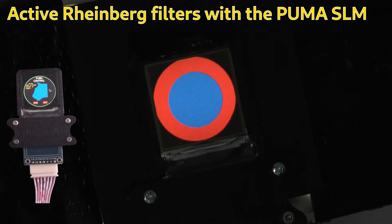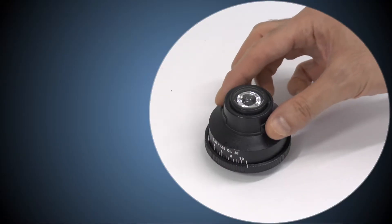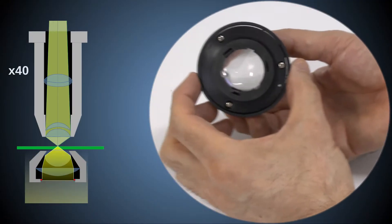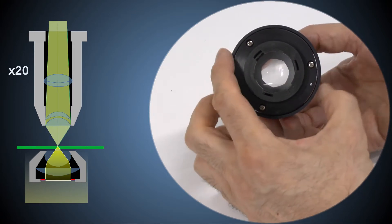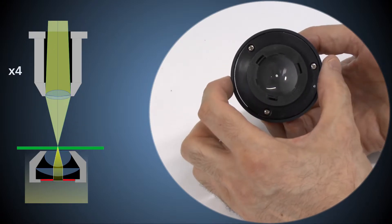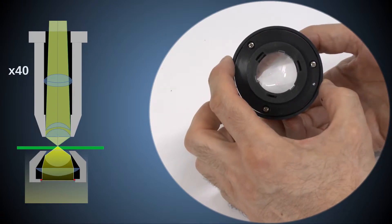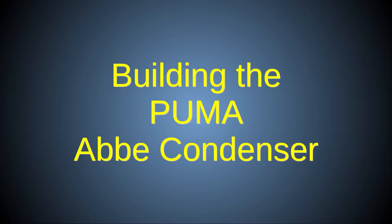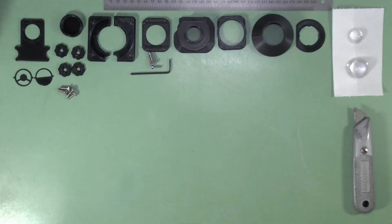Most other microscopes have only a simple iris diaphragm for the condenser to vary its numerical aperture to match the numerical aperture of the current objective. These are the parts and some of the tools you'll need to build the Puma Abbe condenser. Details are provided in the video description.